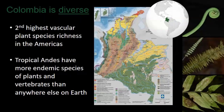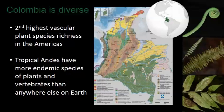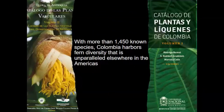Colombia has a lot of topographic diversity. This is where the Northern Andes split into three different mountain ranges: the Occidental, Central, and Oriental Cordilleras. The two main rivers that break up the country are the Orinoco and the Amazon. This topographic diversity results in climatic diversity, which translates into species diversity. Colombia has the second highest number of vascular plants in the Americas, and the tropical Andes have more endemic species of plants and vertebrates than anywhere else on Earth. With more than 1,450 known species, Colombia has the highest fern diversity in the Americas.